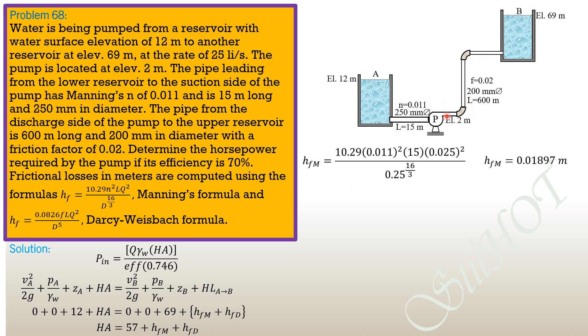The frictional loss in the discharge line by Darcy-Weisbach formula is 0.0826 × 0.02 × 600 × (0.025)² / (0.2)⁵, which equals 1.936 meters.